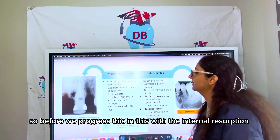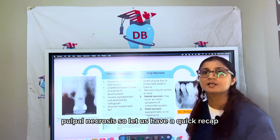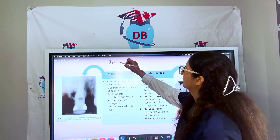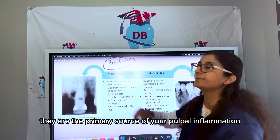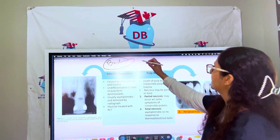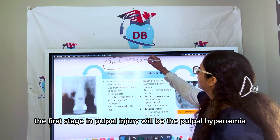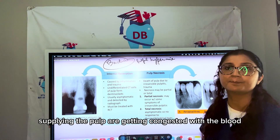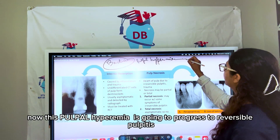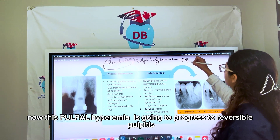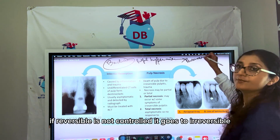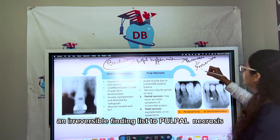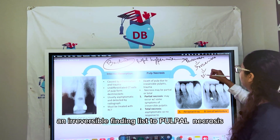Before we progress, let us have a quick recap on internal resorption and pulpal necrosis. Bacteria from dental caries are the primary source of pulpal inflammation or pulpal injury. The first stage in pulpal injury is pulpal hyperemia, where the blood vessels supplying the pulp become congested with blood. Pulpal hyperemia progresses to reversible pulpitis; if not controlled, it goes to irreversible pulpitis, which finally leads to pulpal necrosis.